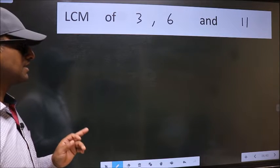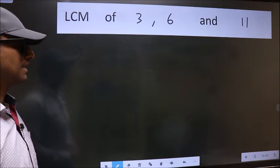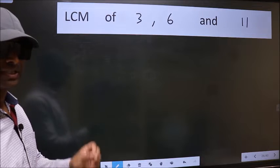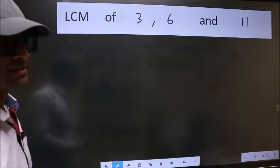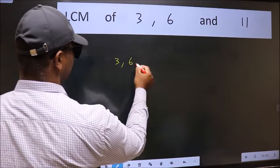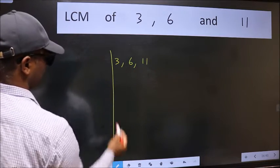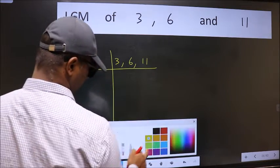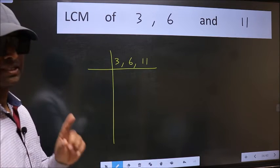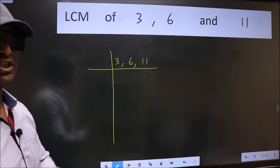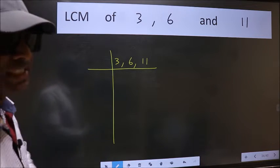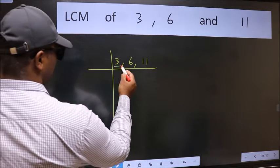LCM of 3, 6, and 11. To find this LCM, we should frame it in this way: 3, 6, 11. This is your step 1. Now we should focus on the first number, which is 3 here.